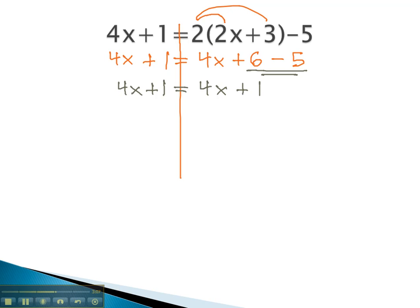Again, at this point, we like to get the variable all on one side. We can get rid of 4 positive x's with 4 negative x's. When we do that, we see the 4x's are subtracting out completely on both sides. On the left side, we're left with 1 equals. On the right side, we're left with 1.